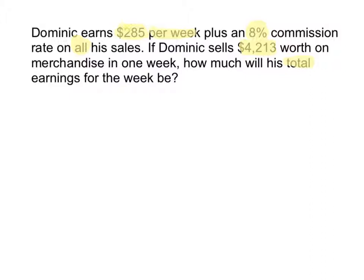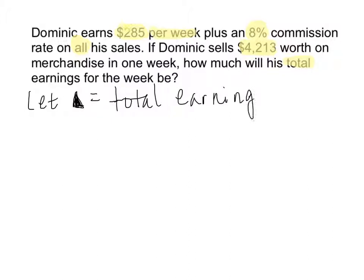What is it we are looking for? What are we going to let our pawn represent? Let our pawn be the total earnings for the week. We're looking for the total earnings, so everything else has to add up to what we're looking for.